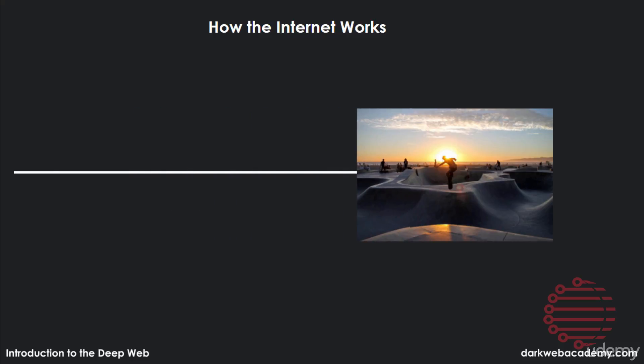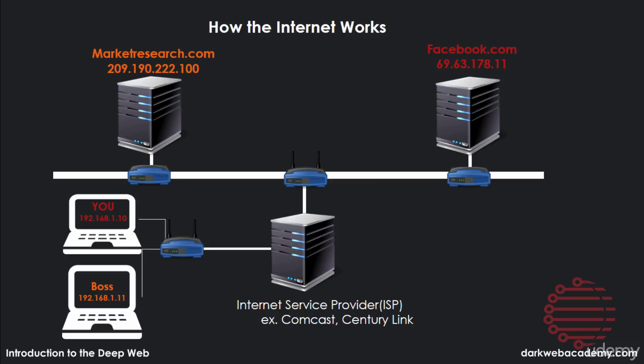One interesting question is how this data doesn't get confused or miss its target. If your computer is not directly hooked up to the internet, how does the information know where to go? In this example, you're connected to Facebook.com and your boss is connected to MarketResearch.com. Even though the internet sees the information coming from one main server, it's actually differentiated in your router — that blue box on the screen between you and your boss. Your router keeps track and gives a special internal IP address to you and your boss, and when information comes back, it marks which IP address it came from so it returns to that same IP address.